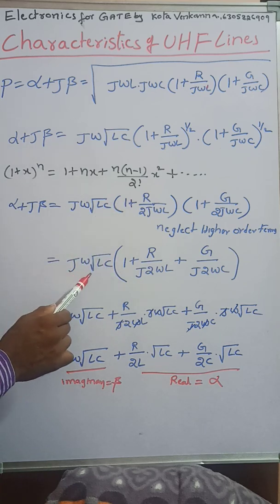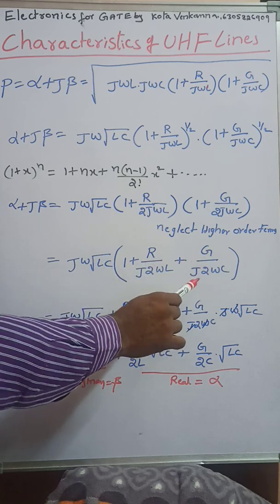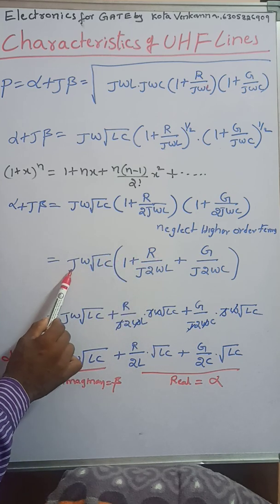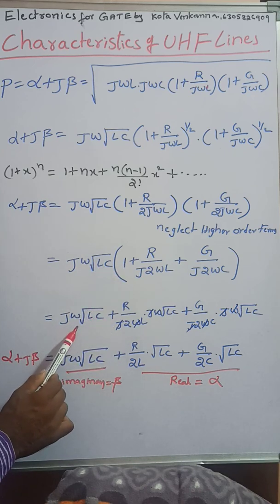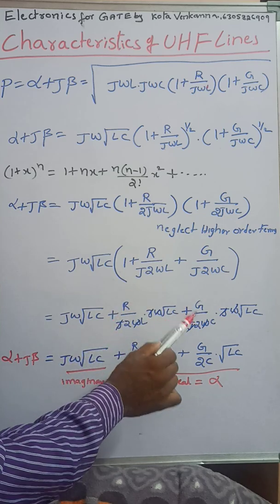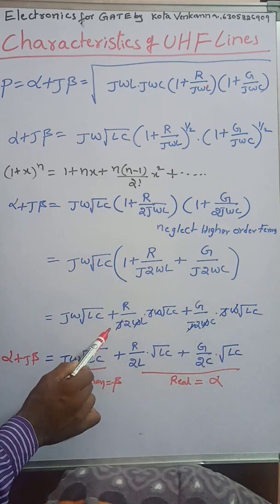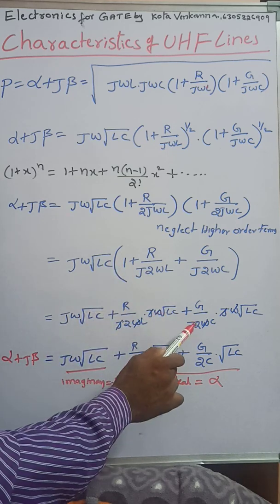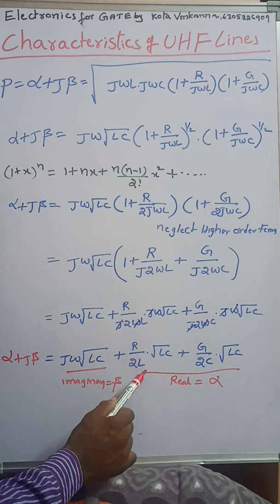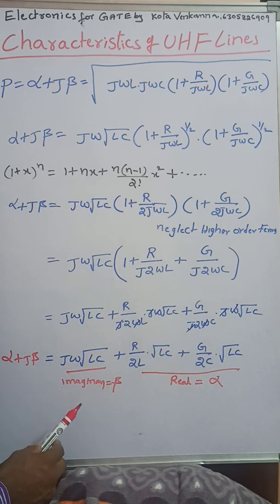So alpha + J·beta equals J·omega·√(LC) multiplied by (1 + R / 2J·omega·L + G / 2J·omega·C). Multiplying through: J·omega·√(LC) + R / 2L · √(LC) + G / 2C · √(LC). Here J·omega cancels in the R and G terms, leaving those as real terms.